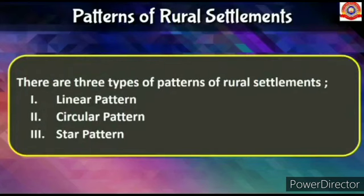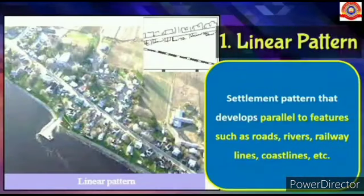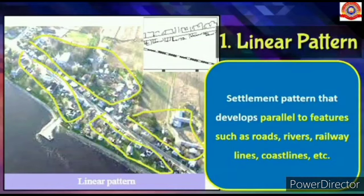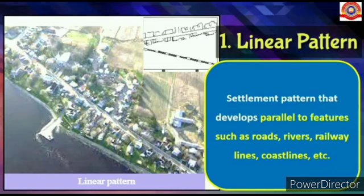There are three types of patterns of rural settlements. First, linear pattern — a settlement pattern that develops parallel to features such as roads, rivers, railway lines, and coastlines.